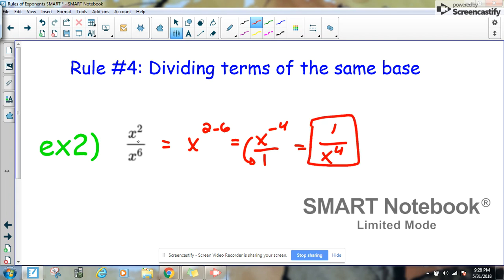Another way to think about this problem is think about x to the 2nd as x times x. And think about x to the 6th as x times x times x, that's 3, 4, 5, 6 of them. You want to ask yourself, how many x's can I remove? Well, I can remove one of them from the top and one of them from the bottom, and I can remove a second one from the top and a second one from the bottom.